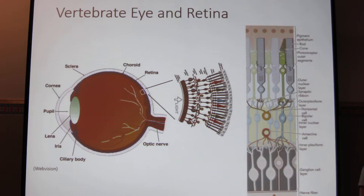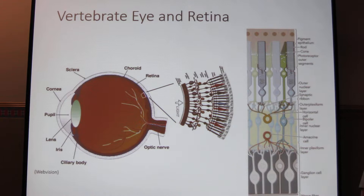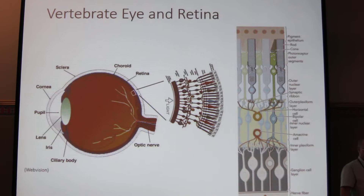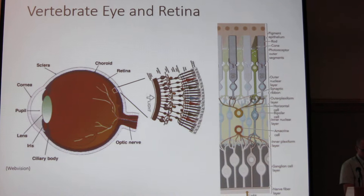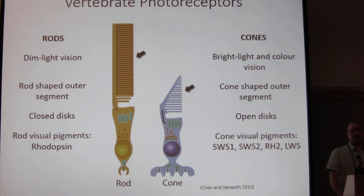As you know, it begins when light enters the eye, and it's focused on the retina by the lens. The retina contains many different cell layers and different cell types, but today we're going to be interested in the light-sensitive photoreceptors. In vertebrates we have two types of photoreceptors: the rods for dim light vision, and the cones for bright light vision.